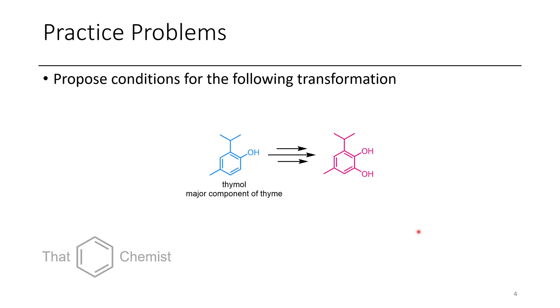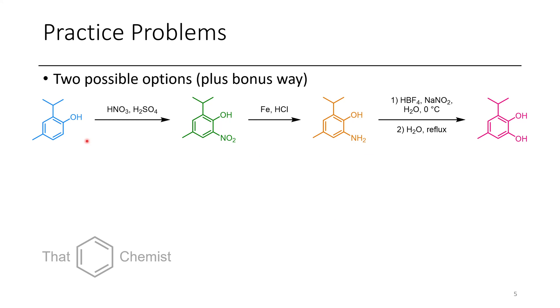Okay, so in the next problem, starting with thymol, we want to convert this to an ortho-diol, or a catechol these are typically known as. And so the first step that I would propose in the first route would be to do an ortho-nitration. As the other ortho and the para position are both blocked, the nitration can only occur in one position.